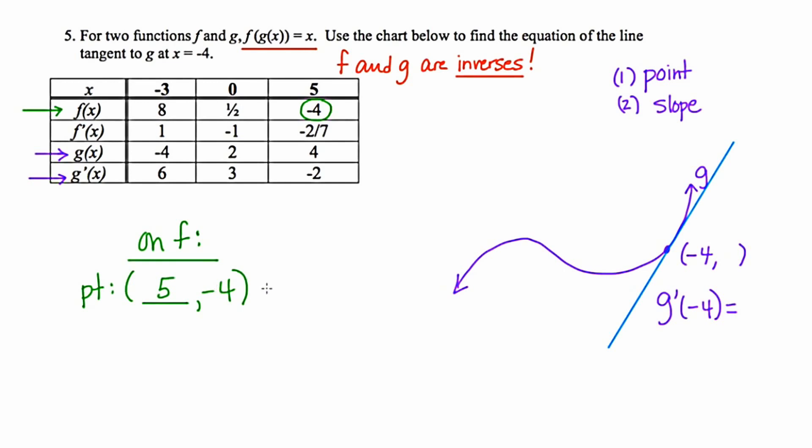And if this point exists on f, then the point (-4, 5) exists on the graph of g. So we've just now figured out what this point is here. Now we've got the full ordered pair.